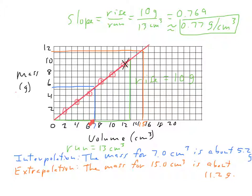If I want to do extrapolation, that means I'm taking a data point that's outside of the existing data points. So 15 is bigger than any of these data points, but I can still do the same process. Go up to the line, go across, and I can read the value. I would expect that for a volume of 15 centimeters cubed, the mass would be 11.2 grams.